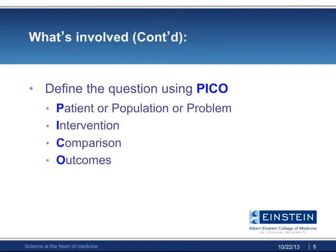Use the four-part PICO formula to write your question. Include the population or disease involved, the intervention, test, or procedure you are studying, a comparison if appropriate, and the outcomes you are measuring.